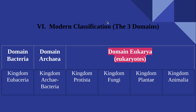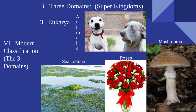Our third and final classification domain is domain eukarya. Eukarya consists of four kingdoms: Protista, Fungi, Plantae, and Animalia. Most of you are probably familiar with portions of fungi, and you'll be familiar with Plantae because that's plants, and Animalia, which is animals. We'll start with the one most people may not know much about: Protista.